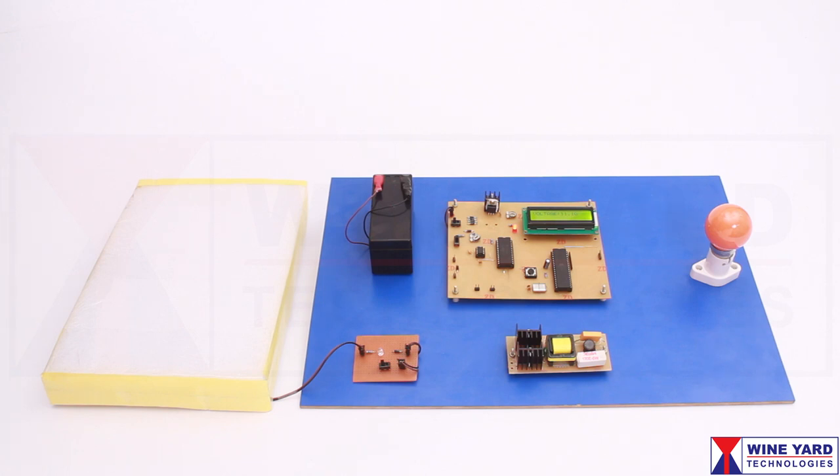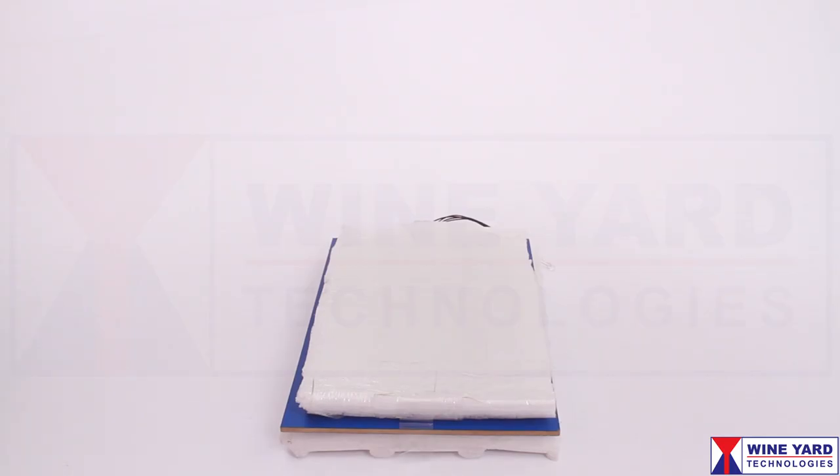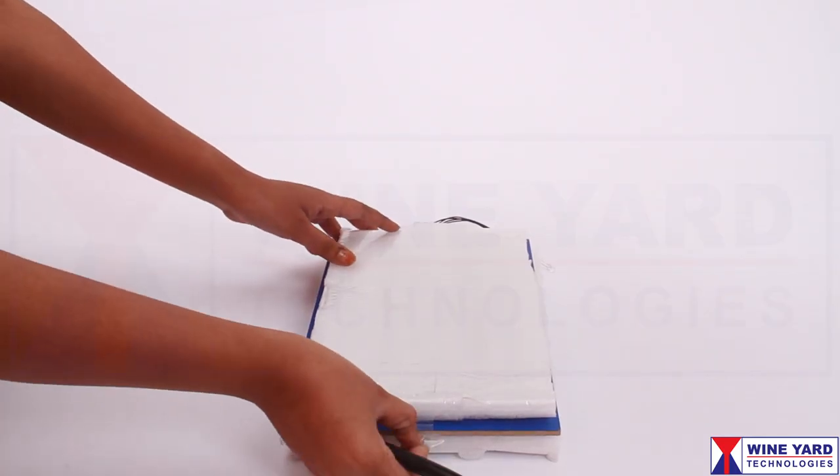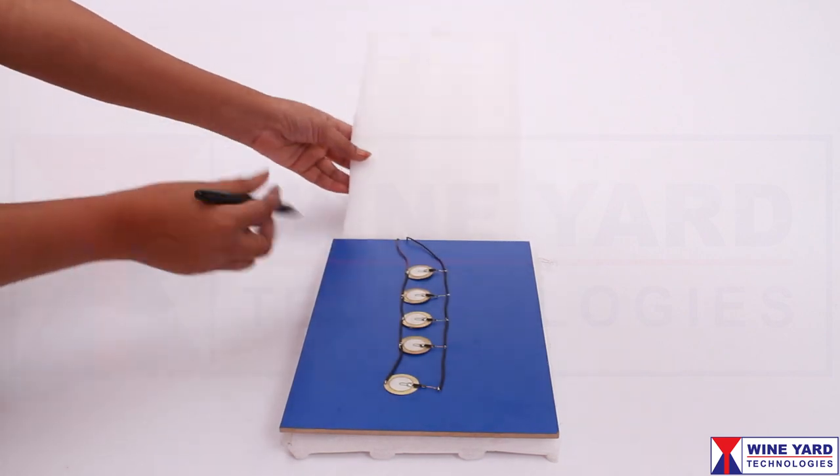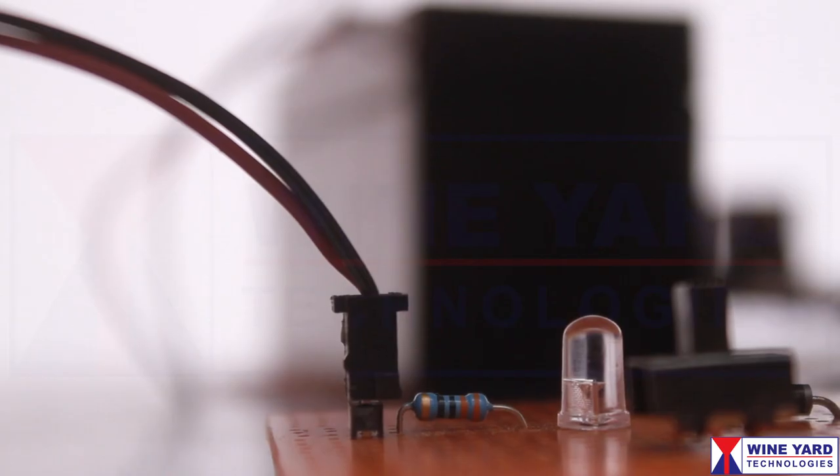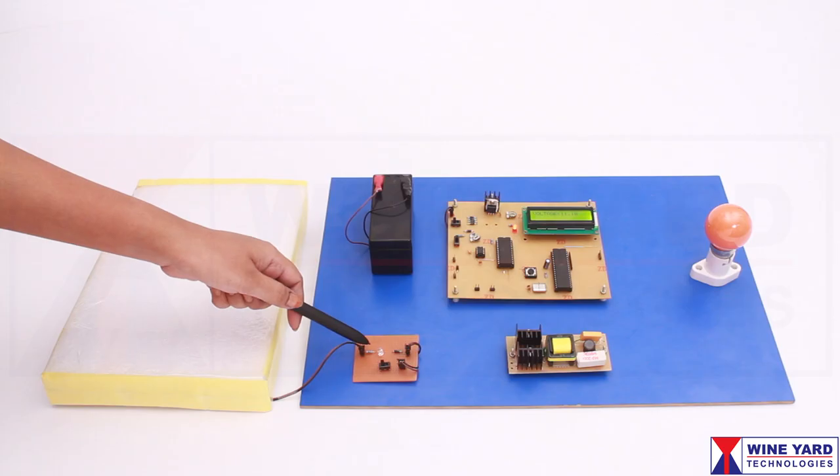Piezoelectric transducers are arranged in this cushioning arrangement. These piezo transducers generate electricity whenever mechanical pressure is applied on this. This LED is provided to indicate the power generation.